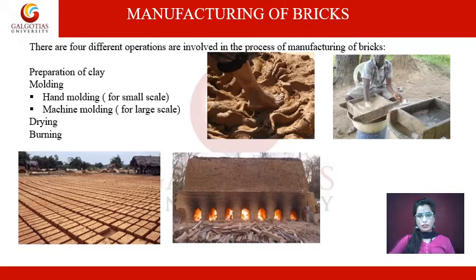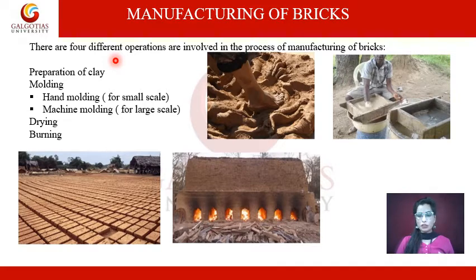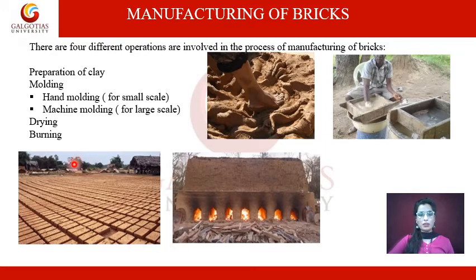In this slide you can see the manufacturing process of brick. There are four operations involved: first is preparation of clay; second is moulding, which can be hand moulding for small scale and machine moulding for large scale; third is drying; and fourth is burning. In the images you can see raw clay, the mould, bricks placed for drying, and finally the kiln where bricks are burned in the last stage.